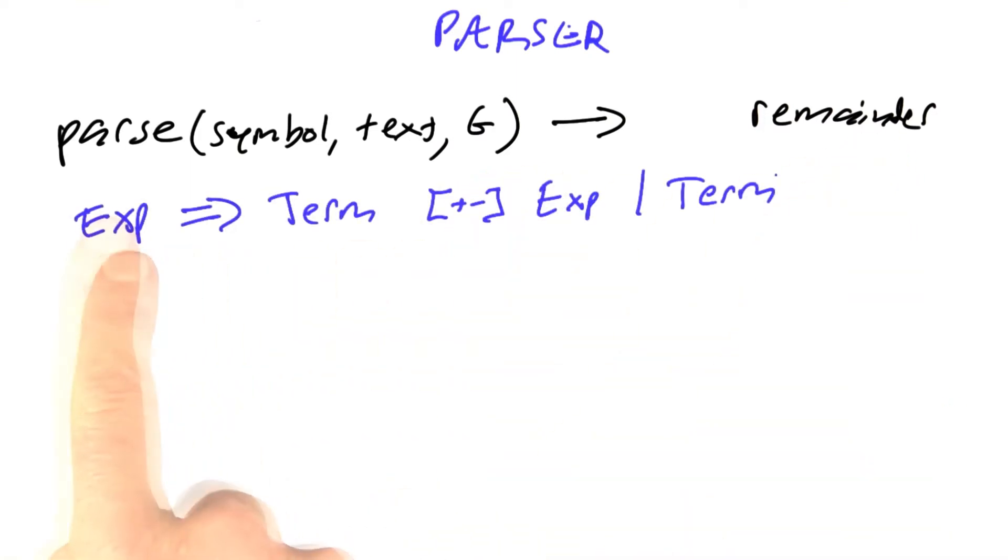The idea is that for each symbol, we're going to consider the alternatives in left to right order. We're going to first say, if we're asked to parse an expression, can we parse this alternative? If we can, if we can parse in succession a term, and then a plus or minus, and then an expression, then we'll commit to that.